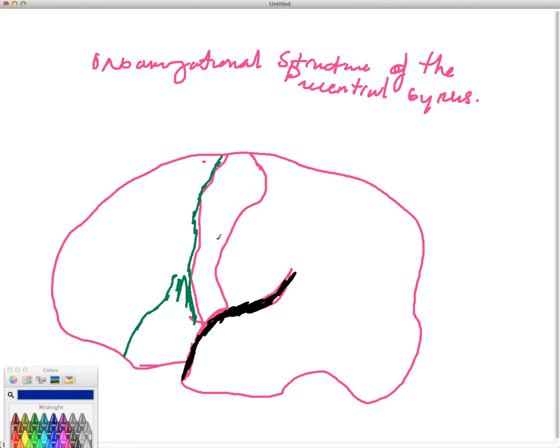We have a frontal lobe. And here we'll draw in. And then, of course, right back here we'll have our occipital. Well, then, this is our cerebellum.